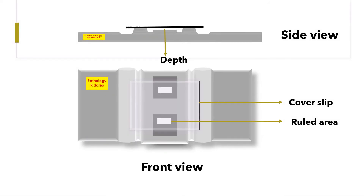This is a Neubauer chamber shown as a front-on view and a side view. In the front view, you can see there are two squares — up and down — where we will be doing all the counting. In the side view, you can see the depth of the chamber, which is equal to 0.1 mm.